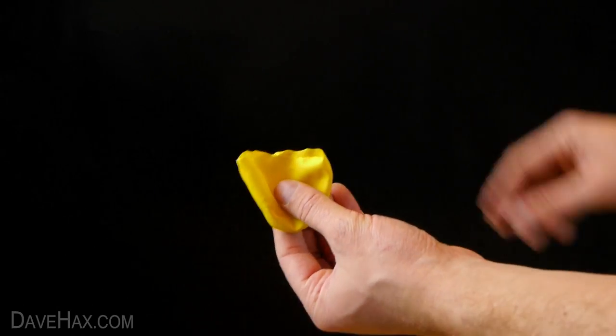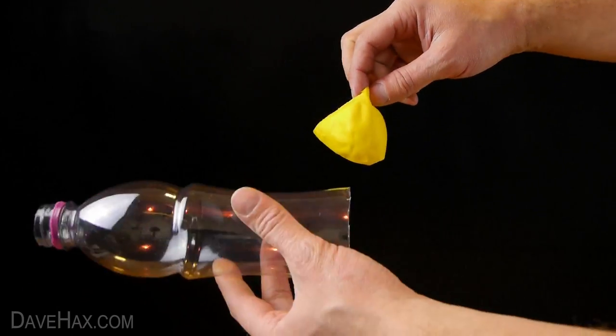Next we're going to take the bottom part of the balloon, open it up and carefully stretch it over the bottom part of the bottle.